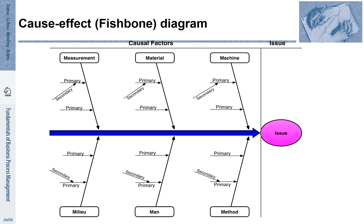A complementary way is to use the cause-effect diagram. It is also called the fishbone diagram or Ishikawa diagram. Here, we have the issue on the right-hand side.